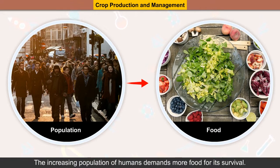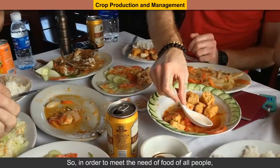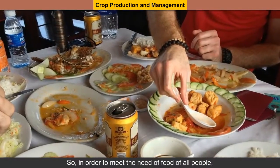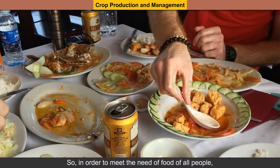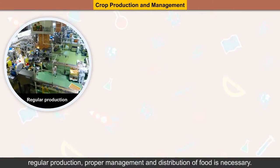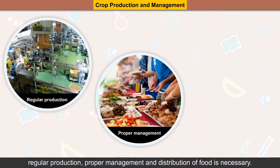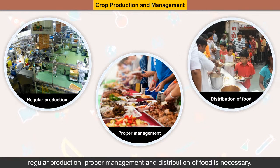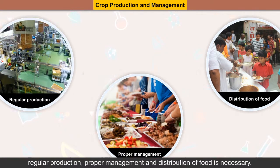The increasing population of humans demands more food for its survival. So, in order to meet the need of food of all people, regular production, proper management and distribution of food is necessary.